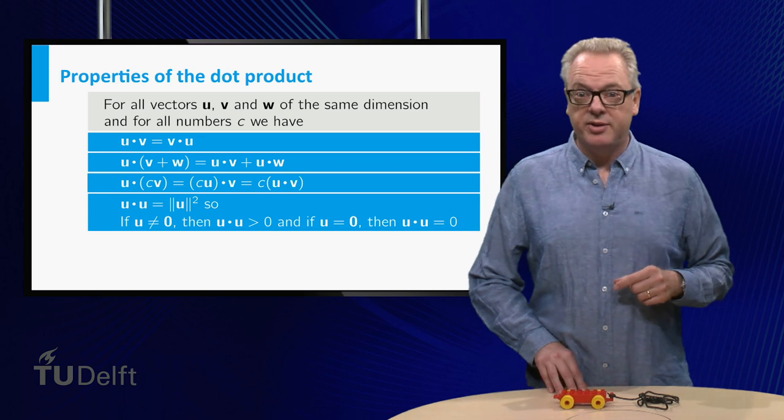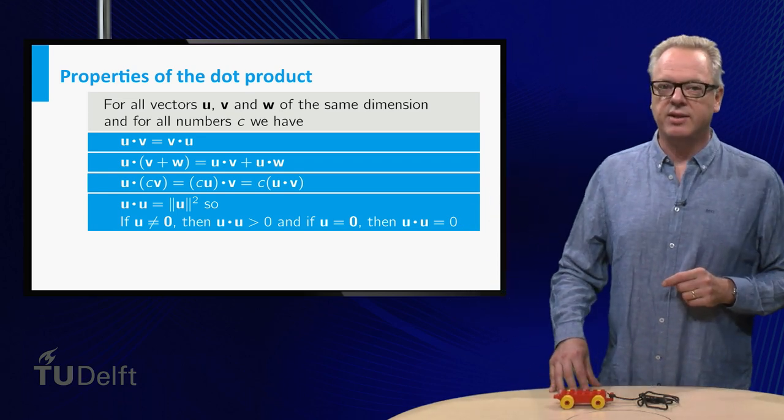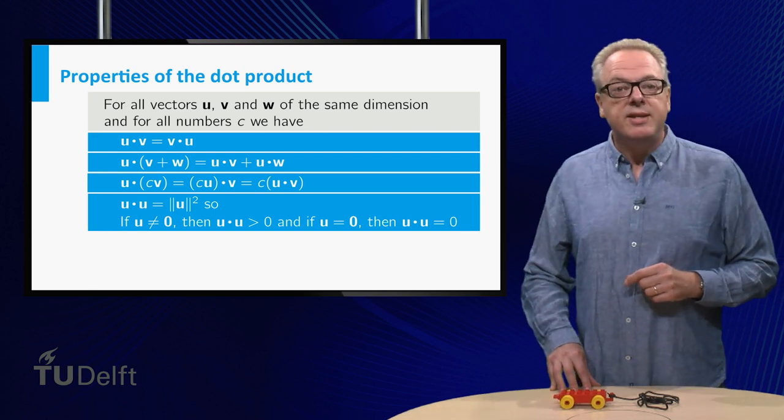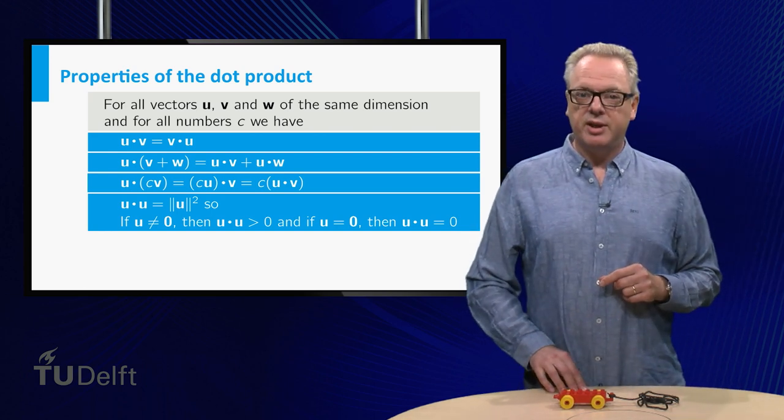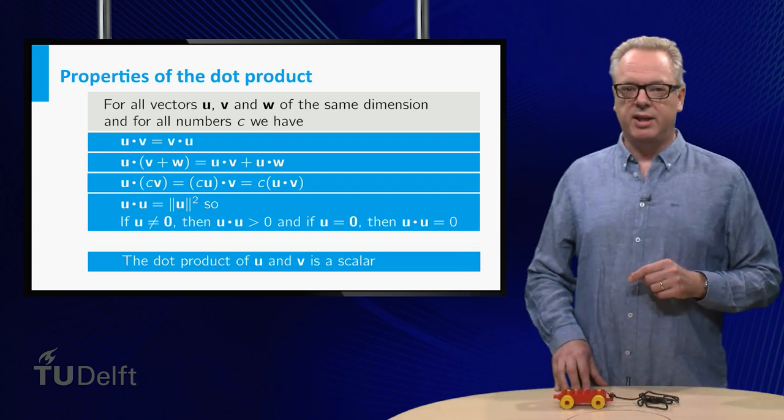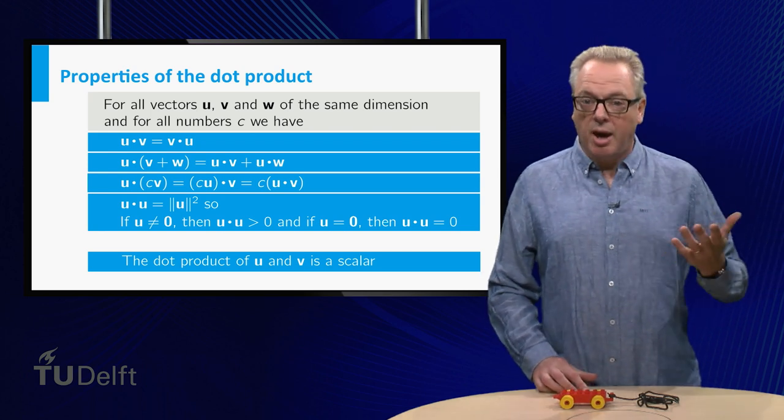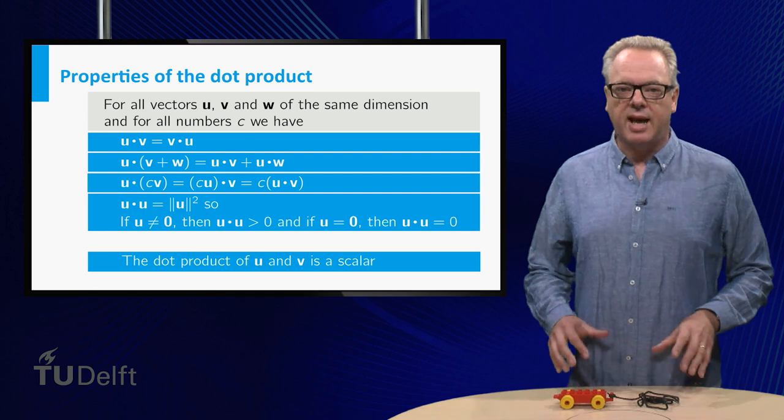One of these weird things is the fact that the dot product of three vectors isn't defined. One reason for this is that the dot product of two vectors is a scalar. The properties given here can all be checked by using the definition of the dot product. Some of them are left to you as an exercise.